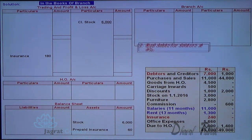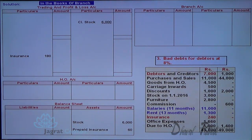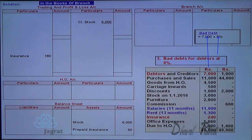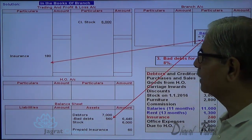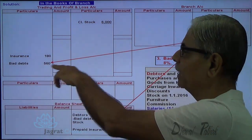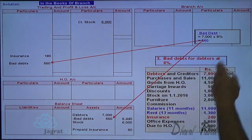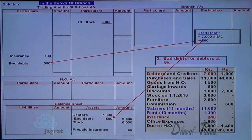The third adjustment is for bad debts. Debtors are 7,000 at a rate of 8%, so bad debts = 7,000 × 8% = 560. Bad debts are a loss, debited to the profit and loss account, and deducted from debtors — leaving net debtors of 6,440.